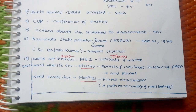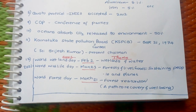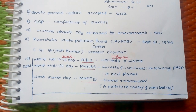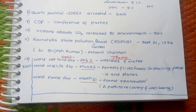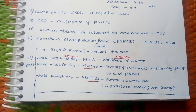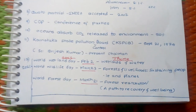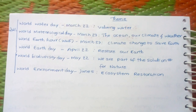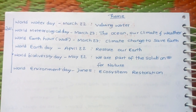Now we will see important dates related to the environment and their 2021 themes. World Wetlands Day: February 2nd — theme: Wetlands and Water. World Wildlife Day: March 3 — theme: Forests and Livelihoods, Sustaining People and Planet. World Forest Day: March 21 — theme: Forest Restoration, A Path to Recovery and Well-being. World Water Day: March 22 — theme: Valuing Water.